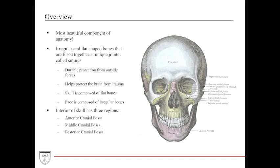I think the head and neck is the most beautiful portion of anatomy — it's very interesting, very fascinating, and also beautiful from a literal aspect because it provides most of the aesthetic component of the face. When we talk about the bones of the face, the bones of the skull, the bones of the head and neck, you have things called the irregular and flat shaped bones.